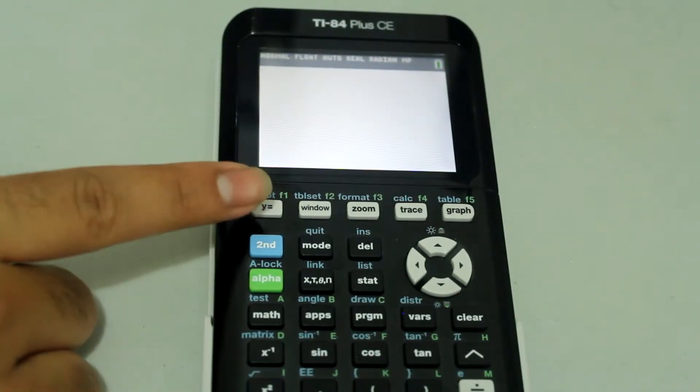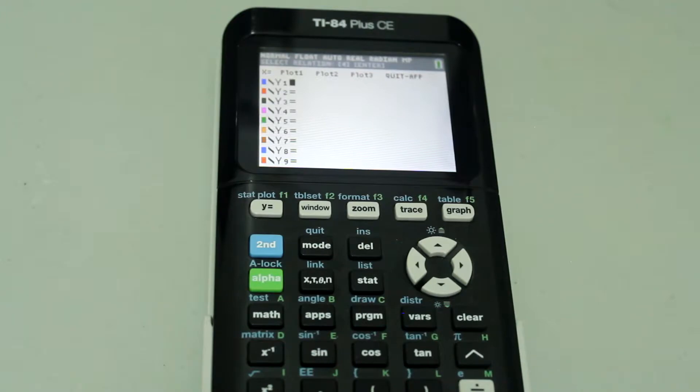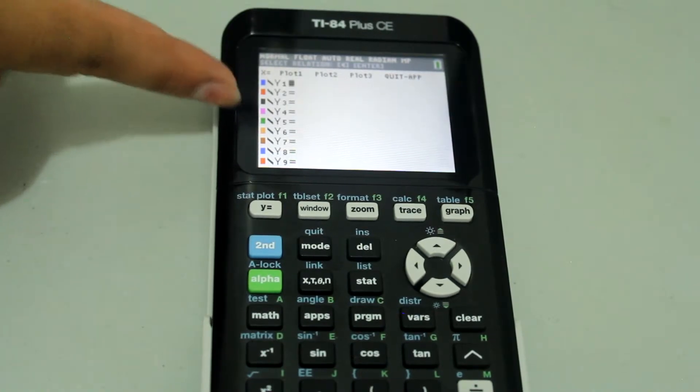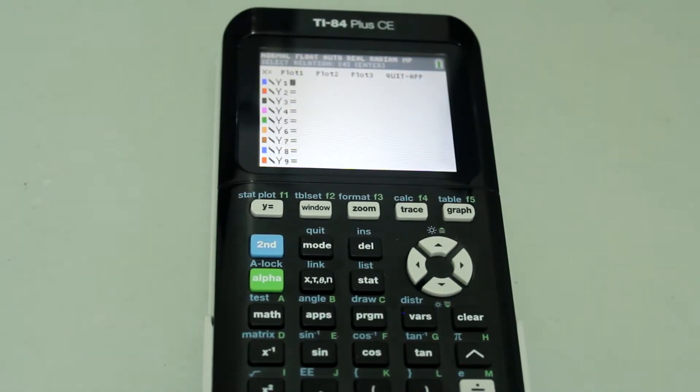First, press the Y= button. This is where you will type in the two functions. Decide which function you are going to label Y1 and which one you label Y2. You could technically enter the functions as Y3, Y4, and so on. However, for simplicity, I'll make function a Y1 and I'll make function b Y2. After I enter them, I'll go back to the home screen.